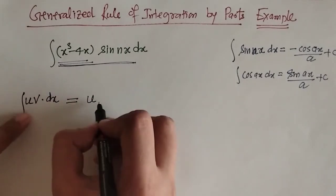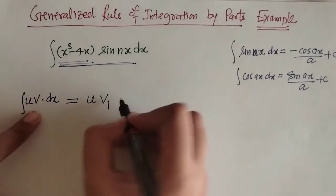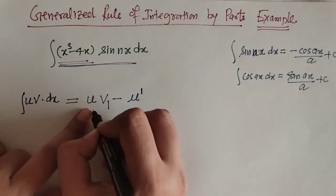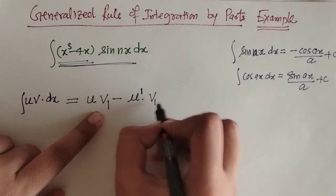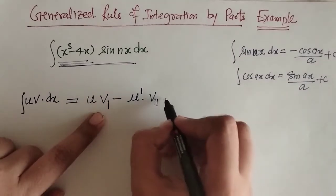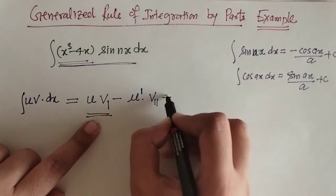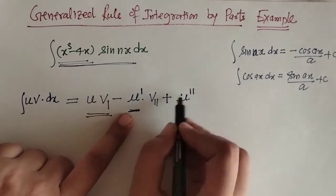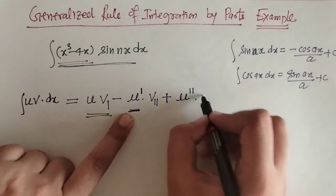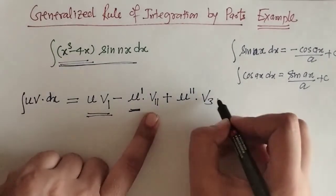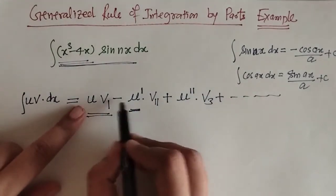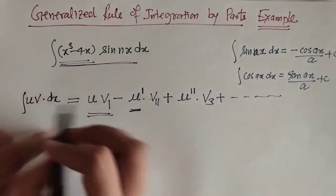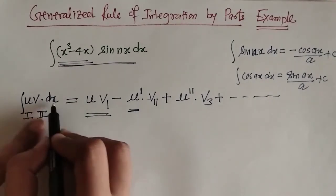The rule is: write the first function as it is, then the second function's integration, minus the derivative of the first factor into the integration of the second term in the preceding term, then plus the second derivative of u into the integration of v, and so on. We must remember to check the alternating plus-minus signs, taking successive derivatives of the first function and repeated integrations of the second function.